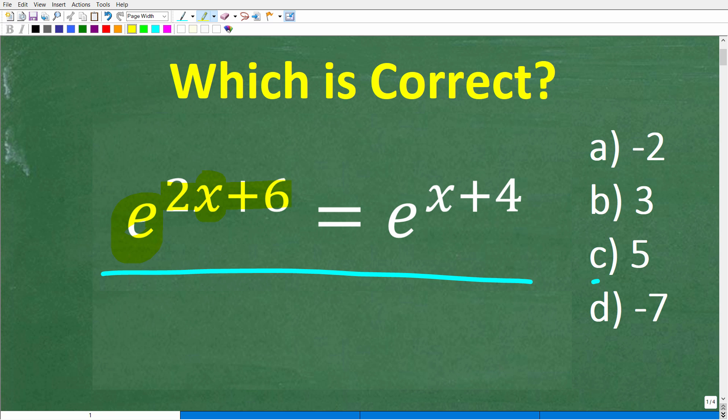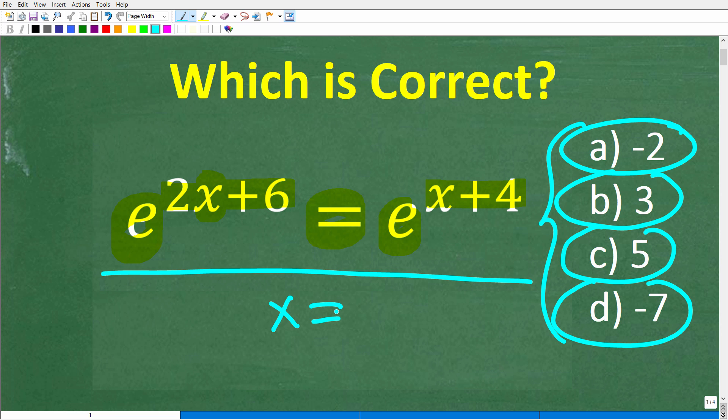We have e to the 2x plus 6 is equal to e to the x plus 4. We do have a multiple choice question here. So a is negative 2, b is 3, c is 5, and d is negative 7. Again, we're trying to solve for the variable x.